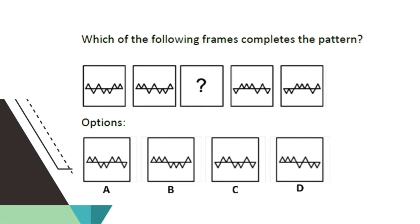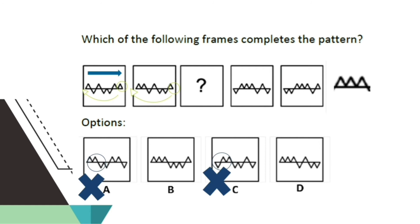Which of the following frames completes the pattern? The pattern for this problem is that the triangles move to the right, and the rightmost triangle moves to the leftmost position. So the next pattern should have three triangles pointing upwards. Letters A and C are wrong since they don't start with three triangles pointing upward. In letter B, the order of the next four triangles is wrong, since they should be pointing down, up, down, and down. Letter D follows the right pattern, so letter D is the final answer.